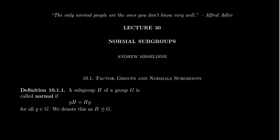But the definition is the following, whether it should be called this or not. A subgroup H inside of some group G is called normal if gH is equal to Hg for all little g inside of the group. In particular, we say that a subgroup is normal if every left coset is equal to its corresponding right coset, and so it doesn't matter which element you choose in the group.